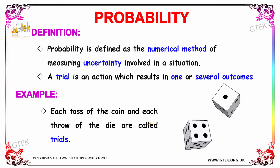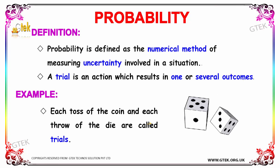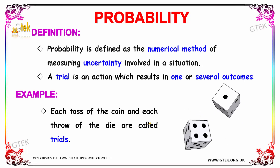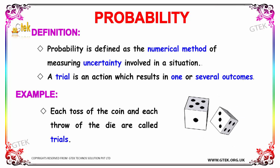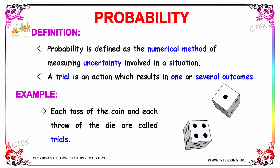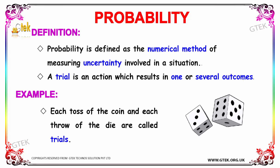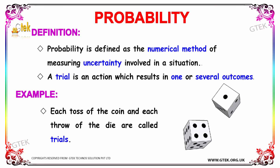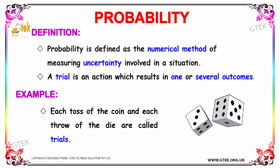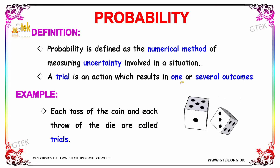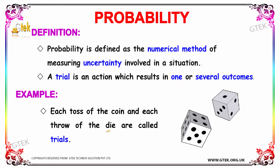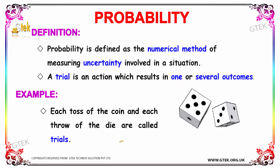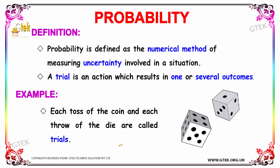The keen definition of probability is defined as the numerical methodology of measuring uncertainty involved in a particular situation. A trial is considered to be an action which results in several outcomes. For example, each toss of a coin and each stroke of a die are called trials.